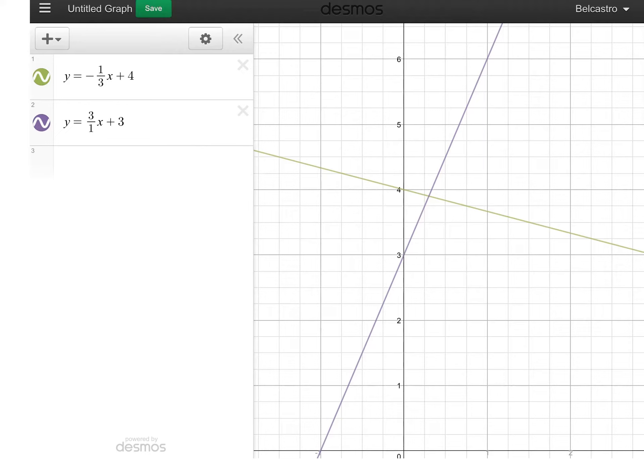I have graphed two lines that are perpendicular. Who remembers what the word perpendicular means? They intersect at a 90 degree angle.